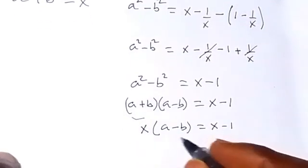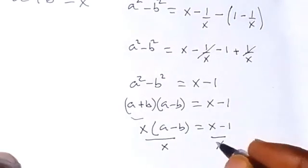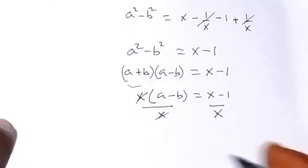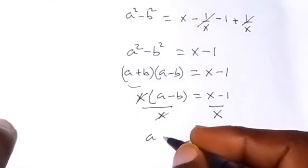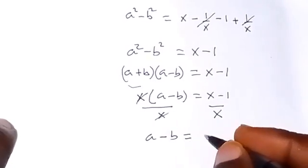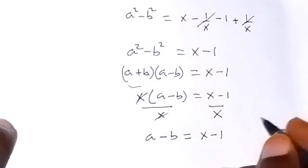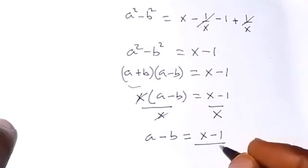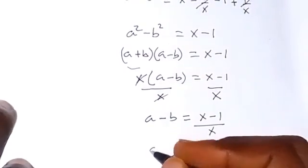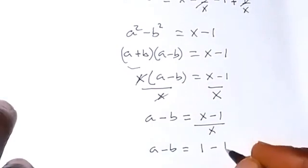To get A minus B, let's divide both sides by x. The x cancels on the left, and we have A minus B equals (x minus 1)/x, which we can separate to give A minus B equals 1 minus 1/x.